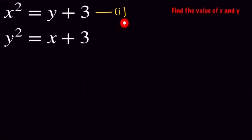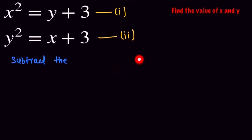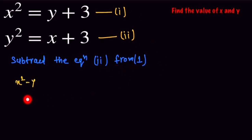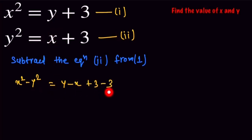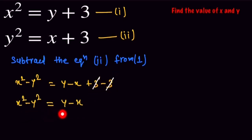Let's suppose this is our first equation and this is our second equation. We subtract the equations, so on subtracting equation 2 from equation 1, x² minus y² is equal to y minus x plus 3 minus 3. This plus 3 and minus 3 cancel out, so the remaining part is x² minus y² is equal to y minus x.